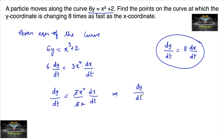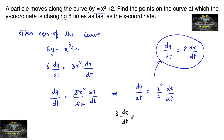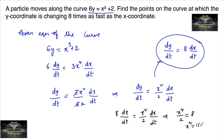So dy/dt is equal to x²/2 times dx/dt, but it is given that dy/dt is equal to 8 times dx/dt. Substituting, we have 8 dx/dt = x²/2 dx/dt, which gives x²/2 = 8, or x² = 16.